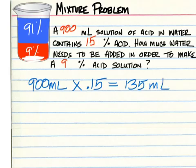Now we want that 135 milliliters to be only 9% of the total contents of the container, which means we have to add more water to it, but we don't know how much. We do know that 135 milliliters will stay the same in terms of acid.